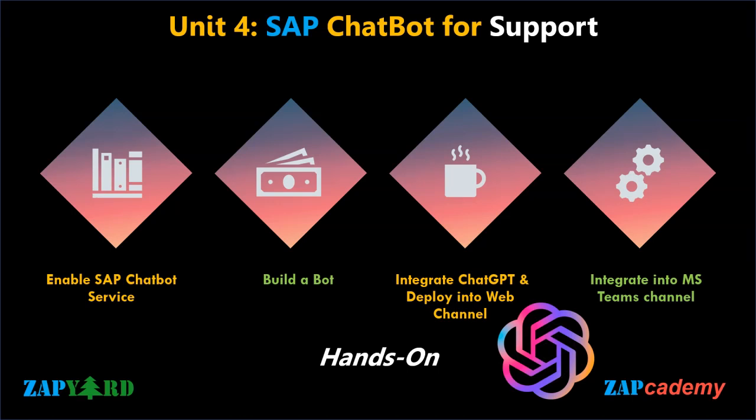Enhance the capabilities of the bot by integrating ChatGPT, bringing a higher level of contextual understanding and intelligence to the conversation. Integrate the bot into the web channel, making it accessible to customers on their website. Configure the chatbot's appearance, behavior, and integration with the web platform for a seamless and engaging user experience. Next, extend the reach of your bot by configuring it with your MS Teams channel. We will demonstrate a step-by-step guide to set up the chatbot as a Teams app, enabling users to interact with it directly within the Teams environment. By the end of Unit 4, you will understand and unlock the power of SAP CAI and ChatGPT to deliver intelligent customer support.